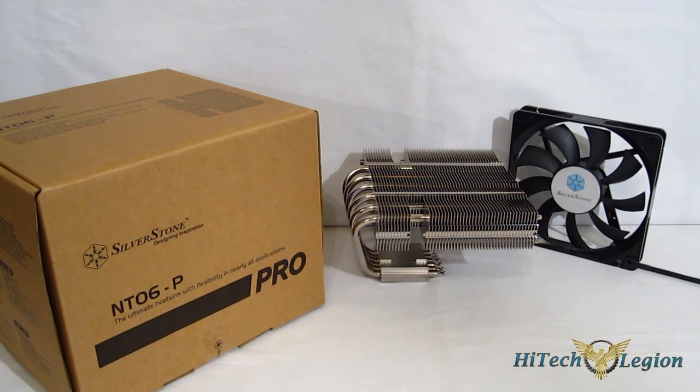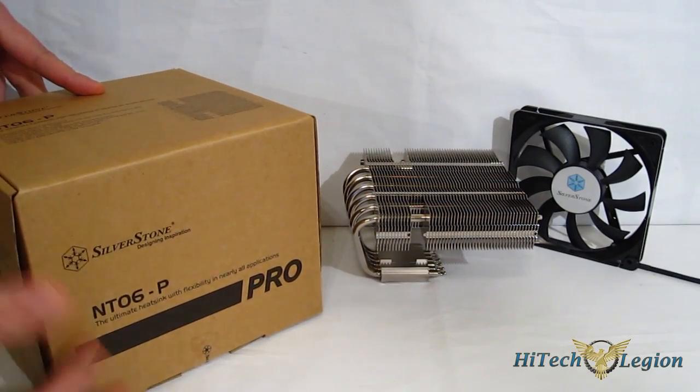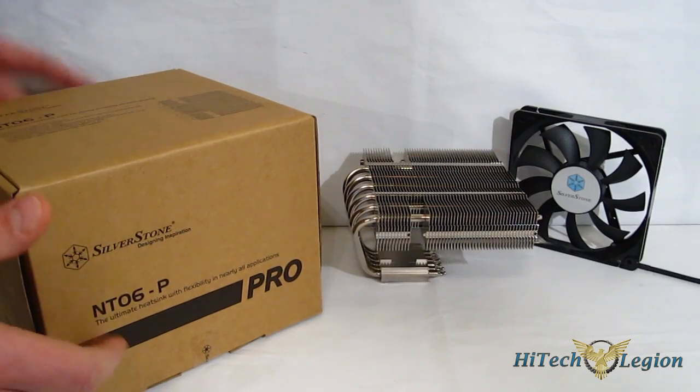It's a top-down cooler with six 6mm heat pipes, stands only 83mm tall. Silverstone uses very plain packaging, cardboard box with Silverstone logo and whatnot on there.